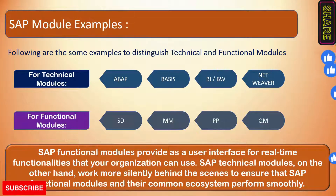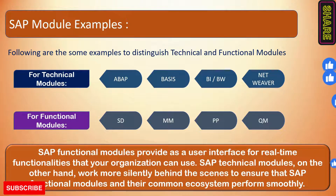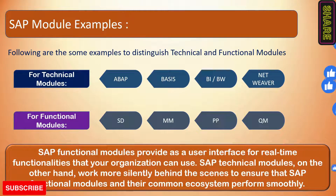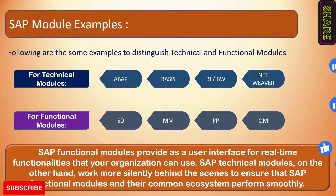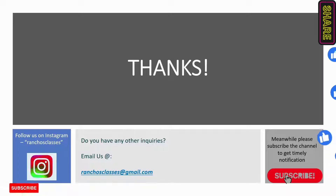At the bottom of the screen is a short definition of SAP functional and technical modules. SAP functional modules provide a user interface for real-time functionalities that your organization can use. On the other hand, SAP technical modules work more silently behind the screen to ensure that SAP functional modules and their common ecosystem perform smoothly. As mentioned, functional modules provide functionalities to the business as per the organization structure, while SAP technical modules support them so the common ecosystem performs as expected.